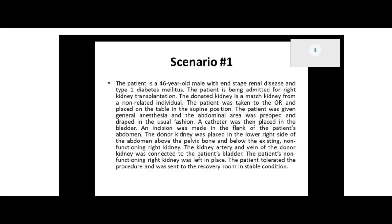It says in the second sentence the patient is being admitted for right kidney transplantation. So on page 120, under Transplantation → Kidney → Right, we see the code characters 0, T, Y, 0, 0, Z. That gives us six characters. Now we just have to find one more — the seventh character — to complete our code, because all PCS codes have seven characters. Our table is always the first three characters: 0, T, Y. So we flip to table 0TY, which is on page 608.